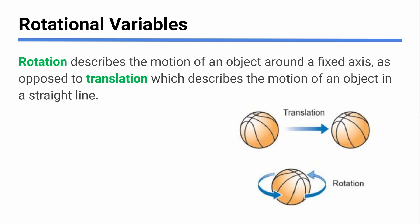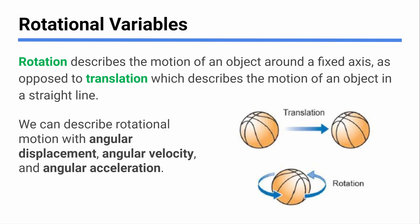Most of what we've done throughout mechanics so far is translational motion — stuff moving in a straight line — and we can use things like SUVAT, F = ma, and momentum to describe what's happening. We have very similar things for rotating objects. We'll start with some quantities of motion: angular displacement, angular velocity, and angular acceleration, which work essentially just like the linear ones we're used to.